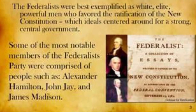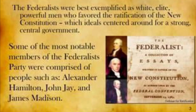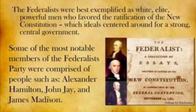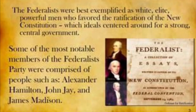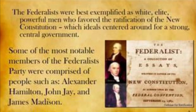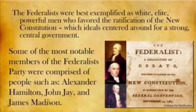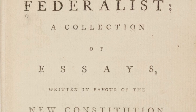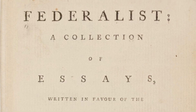In Federalist 10, James Madison tackled the problem of factionalism head-on. He recognized that factions were an inherent part of human nature, but proposed a system of government — the extended republic — that could control their effects. His ideas on the balance between liberty and controlling factions remain relevant in modern political discussions.